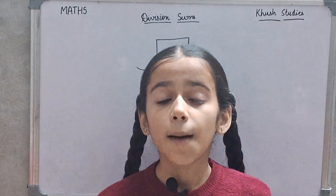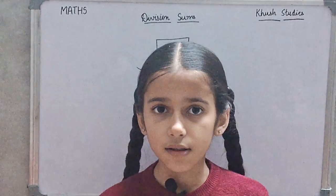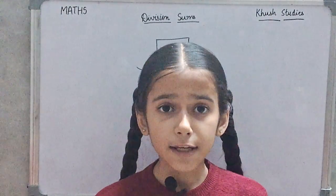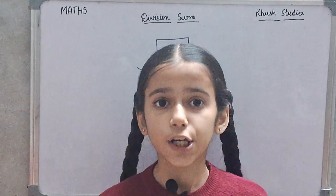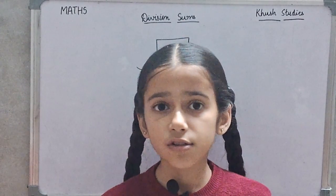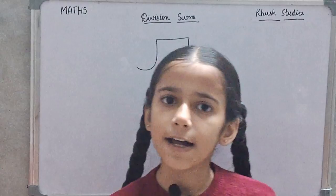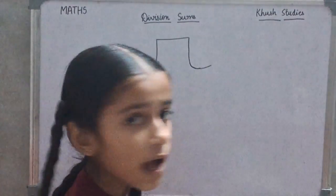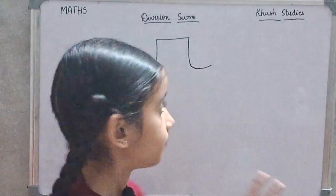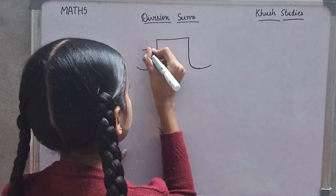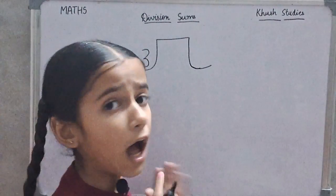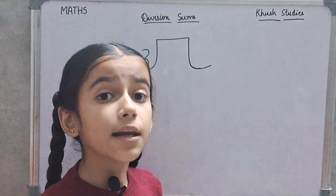Think — a mother has 3 sons and has 9 chocolates. We have to distribute equally among sons. How will we distribute? Let's find out. How many sons? 3. And how many chocolates? 9.